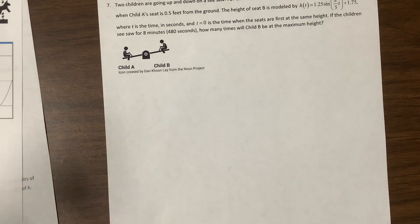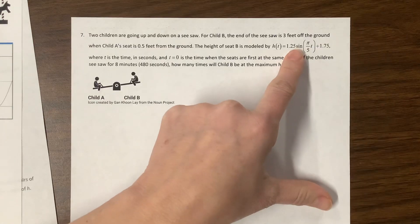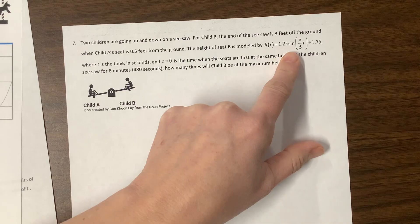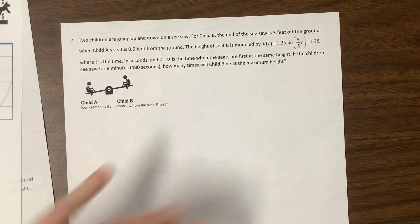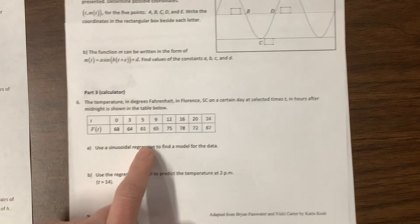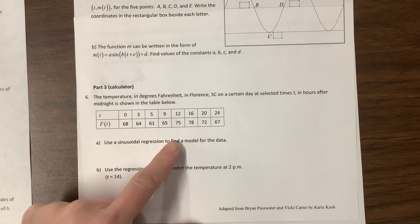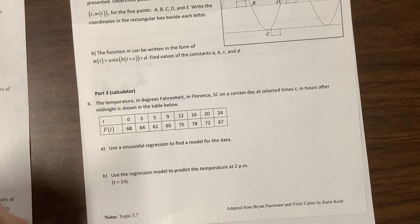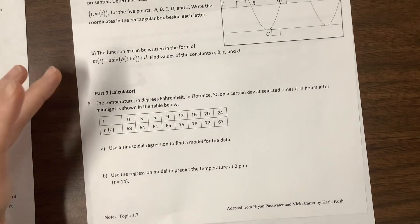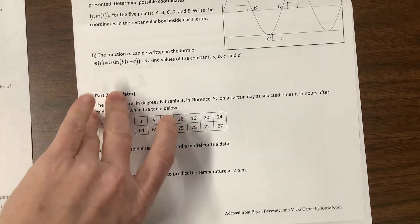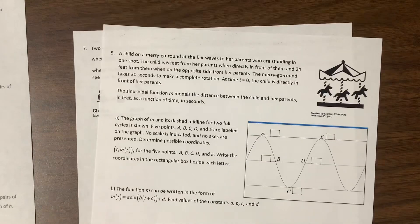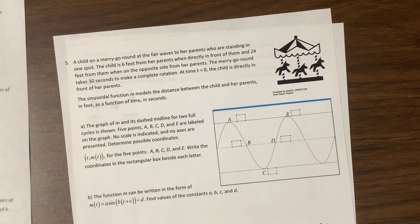The stuff with the calculator — I call it trig regression — is either they give you a really gross equation and it's kind of hard to do by hand, and that's why they give you a calculator. Or the data doesn't perfectly match a trig function, and so we'll do a trig regression and allow the calculator to smooth out the data. That's the overview for 3.7.